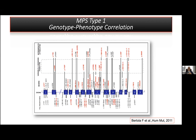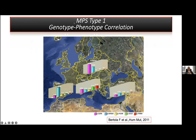Most of the variants are distributed across all coding exons, and we can easily classify the variants as severe or for attenuated form. Interestingly, in nearly every country the mutation spectrum is highly different. For example, in Turkey, these two common nonsense variants are responsible for nearly 15% of cases, but in Poland it is as high as 65% of all cases.